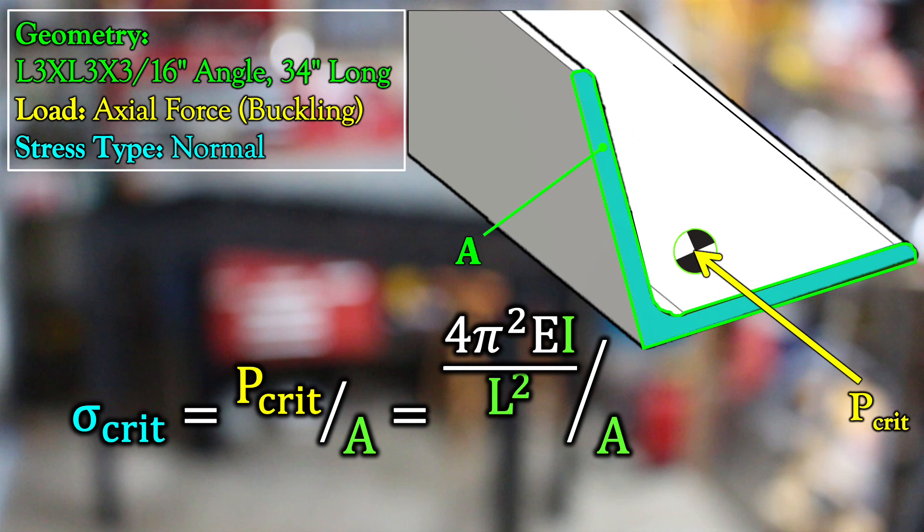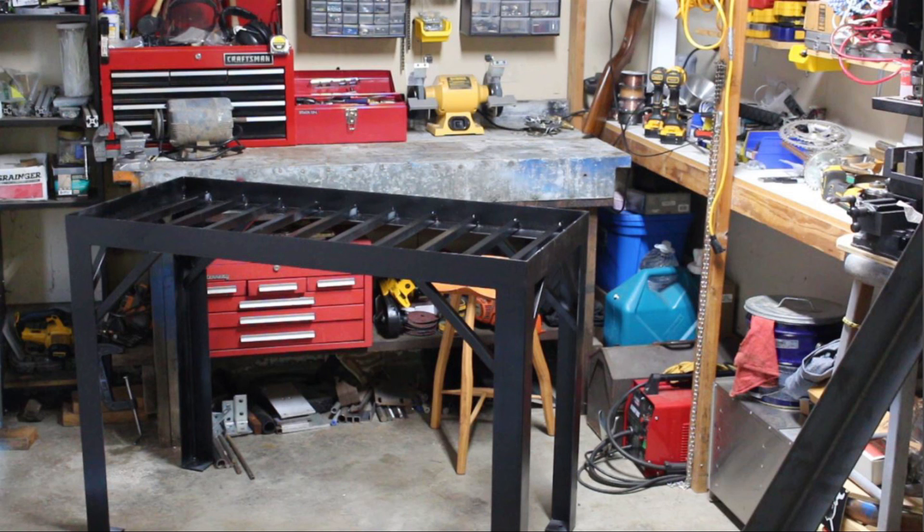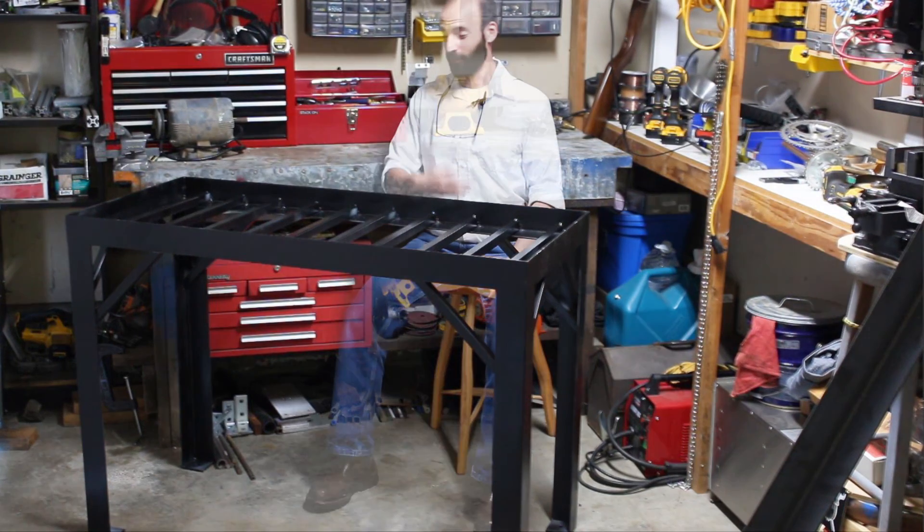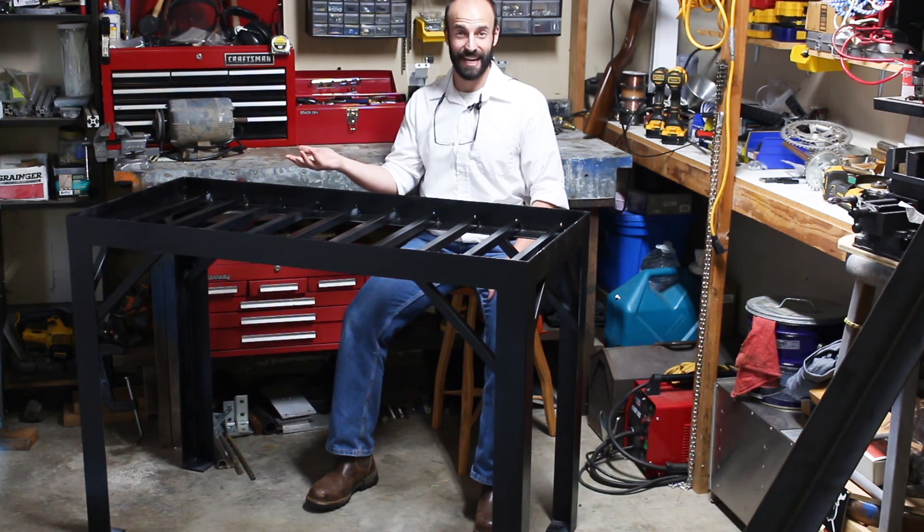Now, if you're unsure what member will fail first, analyze the stress due to all the reactionary loads until you're not unsure anymore. The more of these you do, you'll be able to glance at a frame and have a really good gut feel for which piece will fail first. And then you can just analyze that and save yourself a lot of time. And for a simple frame like this, that's as complicated as it has to be.